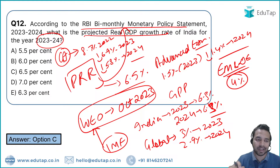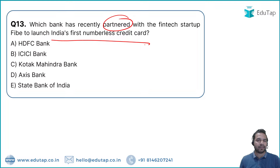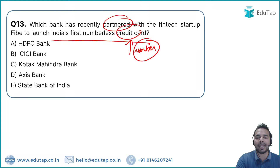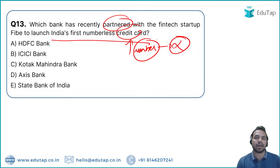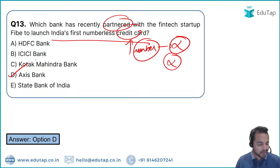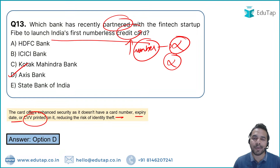Question 14: Which bank has recently partnered with fintech startup 'One' to launch India's first numberless credit card? The answer is Axis Bank — Option D. This card has no card number, no expiry date, and no CVV printed on it, which reduces the risk of identity theft. Axis Bank collaborated with the fintech startup 'One' for this initiative.